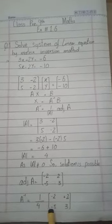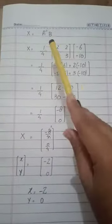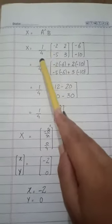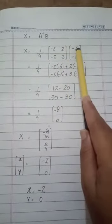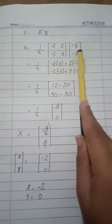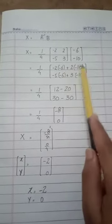Next, the formula is X equals A inverse B. A inverse is 1 by 4 times [minus 2, 2; minus 5, 3]. Matrix B is [minus 6; minus 10]. Now multiply both matrices: minus 2 multiplied by minus 6 plus 2 multiplied by minus 10, then minus 5 multiplied by minus 6 and 3 multiplied by minus 10.